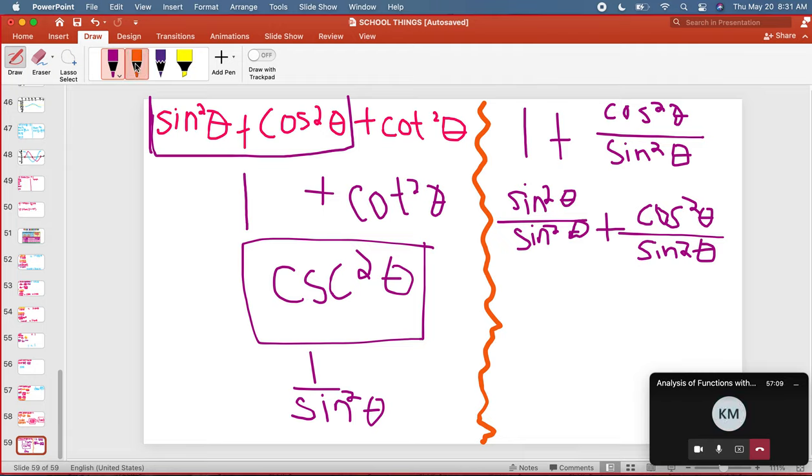So off the bat you should already be realizing that cosine squared theta plus sine squared theta equals one over sine squared theta. And one over sine squared theta equals cosecant theta... cosecant squared theta, excuse me.